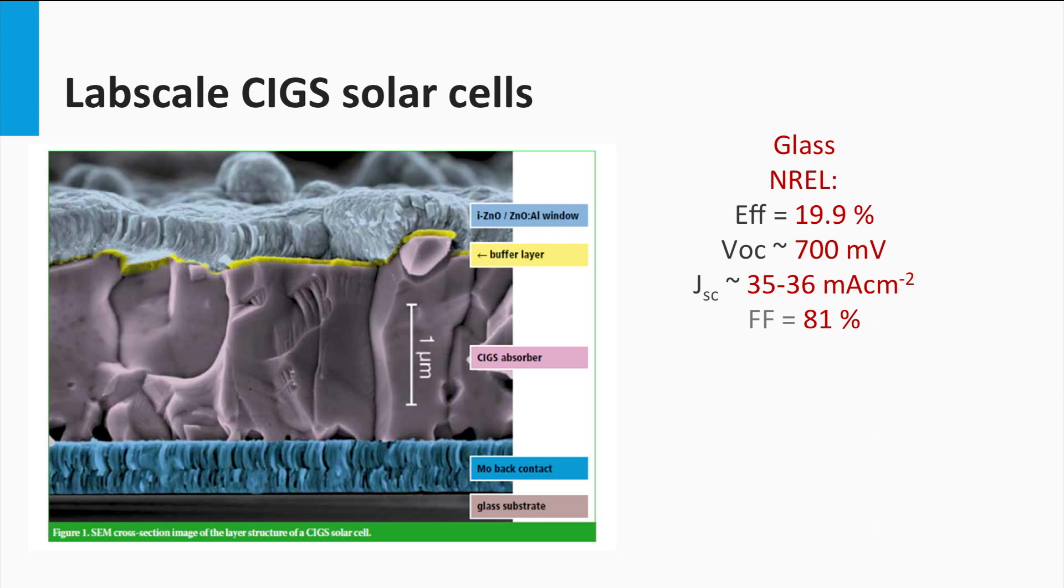Typical open-circuit voltages are close to 700 mV, the fill factor of 81% and short circuit current density between 35 and 36 mA per square centimeter have been achieved.